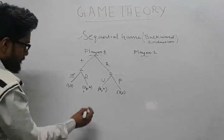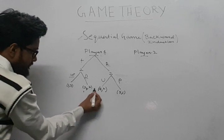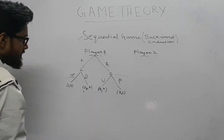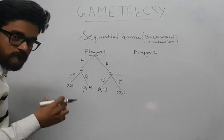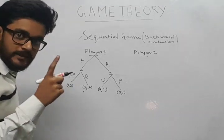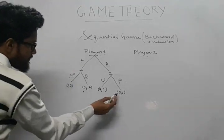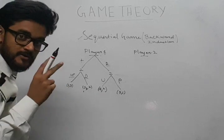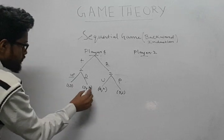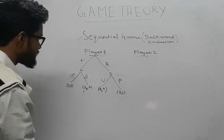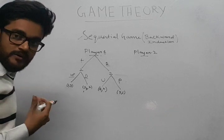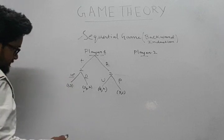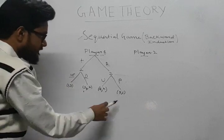The first numbers — 1, 3, 4, 3 — are the payoffs of player 1. So the payoff of player 1 is given by 1, 3, 4, 3, and the payoff of player 2 is given by 3, 2, 2, 1. With the help of backward induction, we can determine player 1's best choice given this payoff matrix.